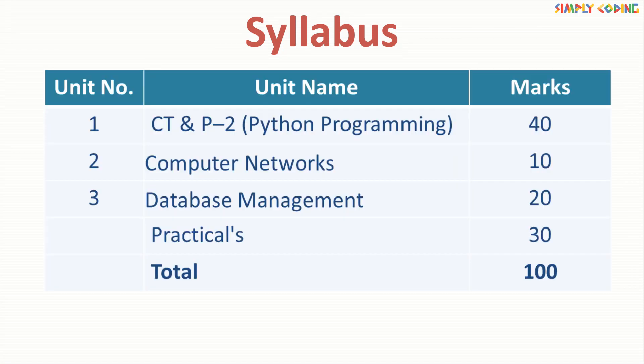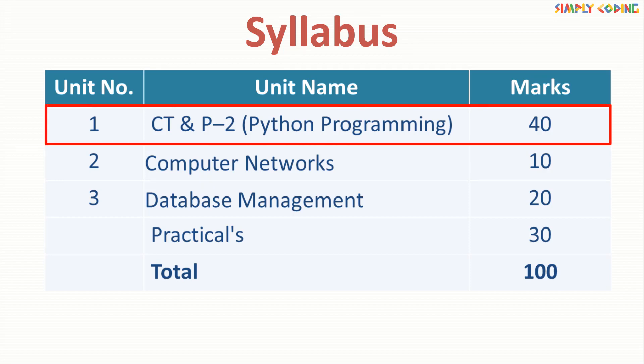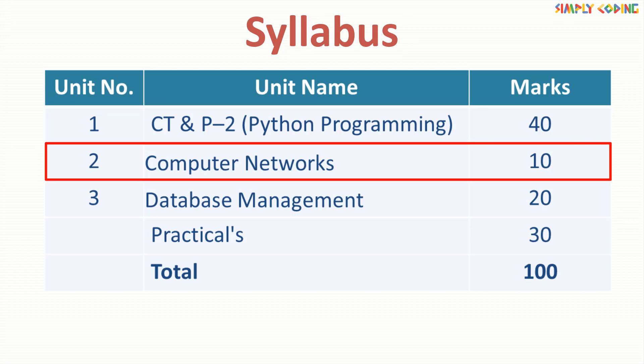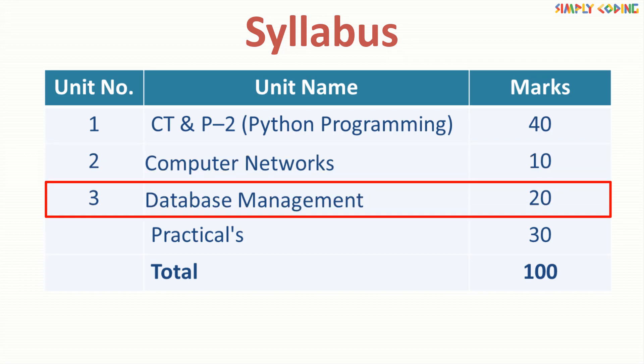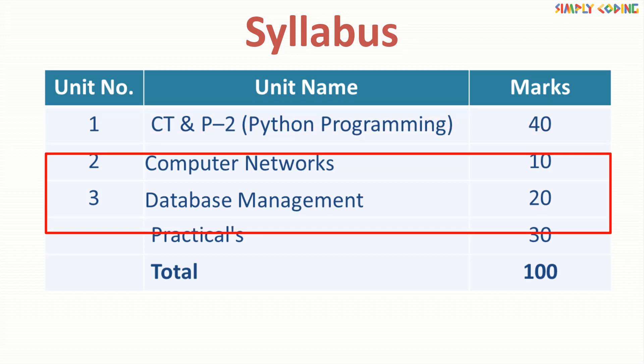The class 12 computer science syllabus is divided into these three units: computational thinking and programming 2, which is Python programming for 40 marks, computer networks for 10 marks and database management for 20 marks, totaling to 70 marks of theory and then 30 marks of practical. In each of them, there are reductions and we will see what those reductions are.